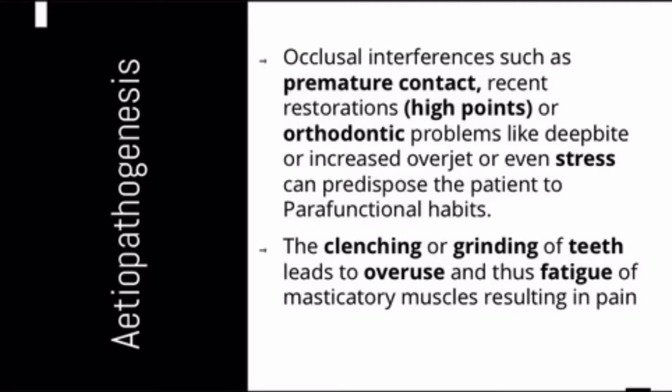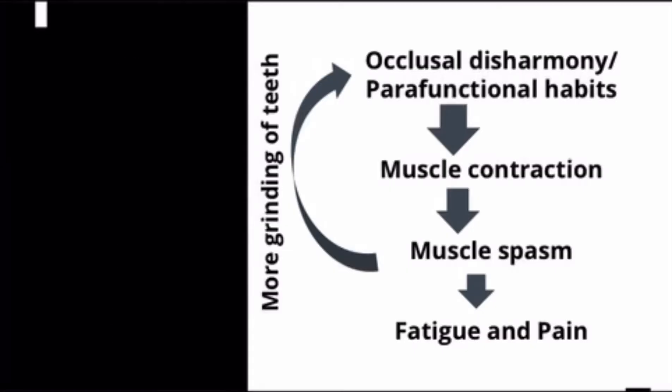Clenching or grinding of teeth leads to overuse of muscles, causing muscle fatigue and pain. This can be summarized as a flowchart: occlusal disharmony or parafunctional habits lead to muscle contraction, which leads to muscle spasm, then muscle fatigue, and eventually pain. This is a vicious cycle — fatigue and pain again cause muscle spasm and contraction, leading to further parafunctional habits, and the cycle repeats.